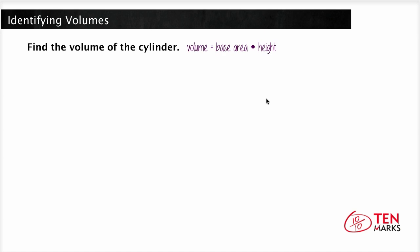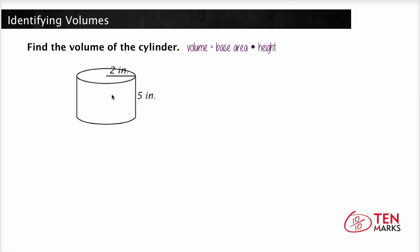The same formula can be used to find the volume of a cylinder. The only difference is that the base is not a rectangle, but a circle. So you are going to need to find the area of a circle and then multiply that base area by the height. To find the area of a circle, the formula is pi times the radius squared. So the volume of a cylinder is pi r squared times h.